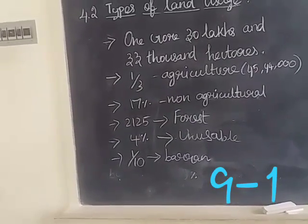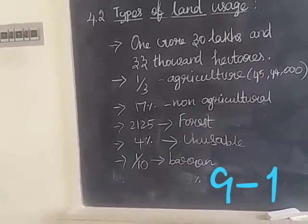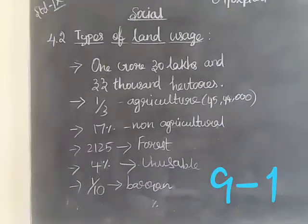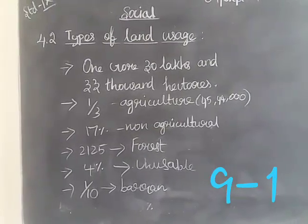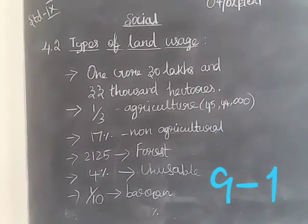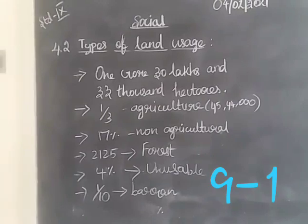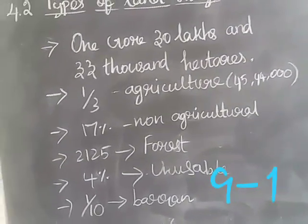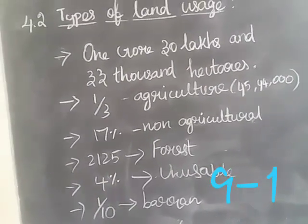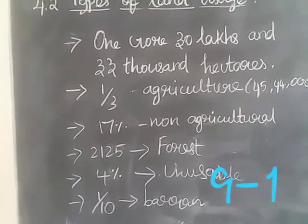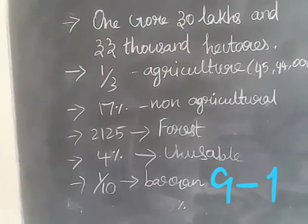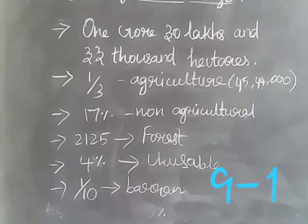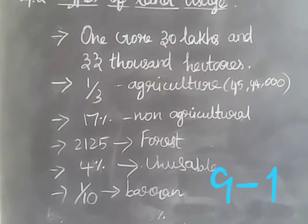Shortage of rainfall leads to the reduction of land usage for cultivation. A small part of this area gives a chance to crop more than once in a year. The extent of this area also changes every year — it was nine lakh hectares one year but was reduced to six lakhs the next. Now we will move on to water resources for agriculture.